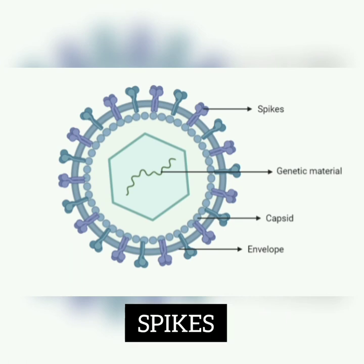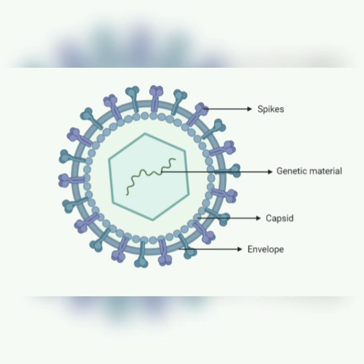Moving on to spikes. Depending on the virus, there may or may not be projections from the envelope called spikes. Spikes are glycoproteins which help the virus attach to the receptor site on susceptible host cells in order to initiate infection. In some viruses, the presence of spikes causes red blood cells in the host to clump together — a property known as hemagglutination. Coronavirus causes hemagglutination.